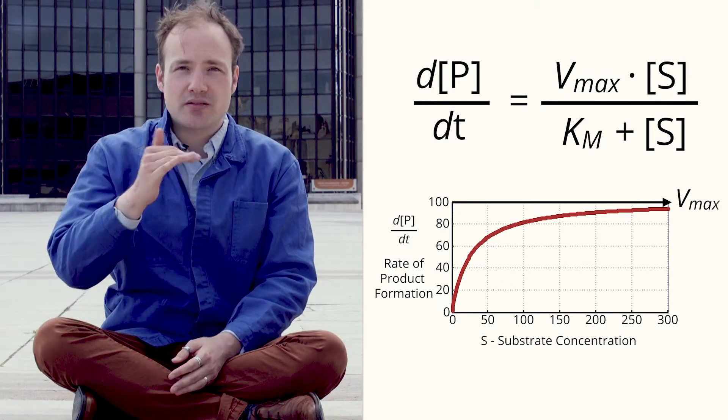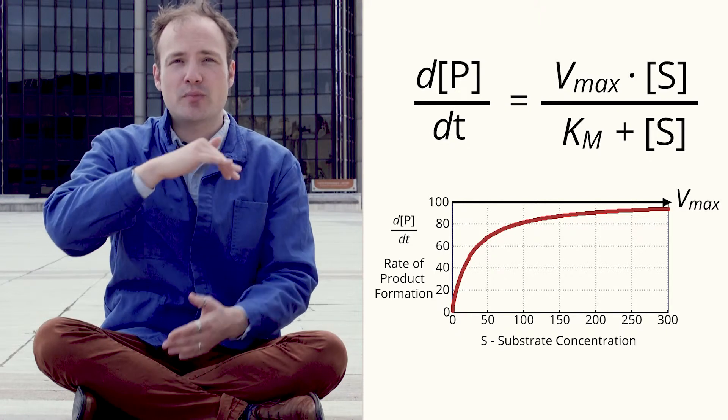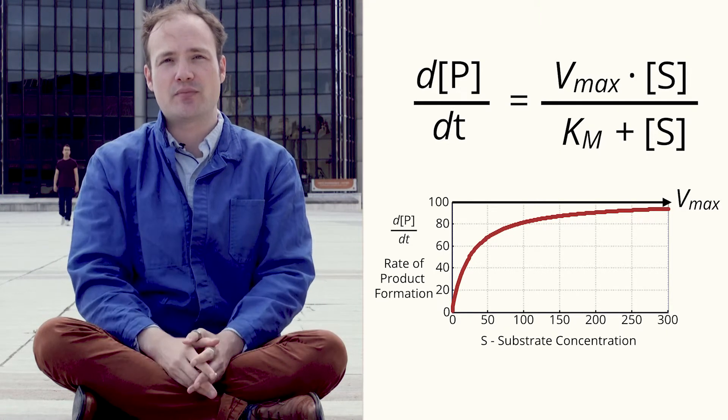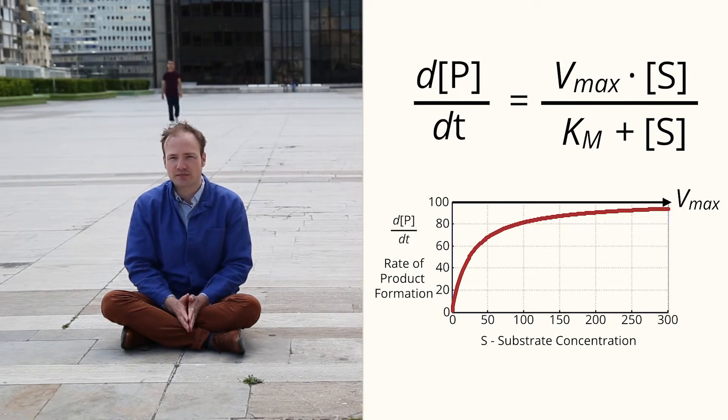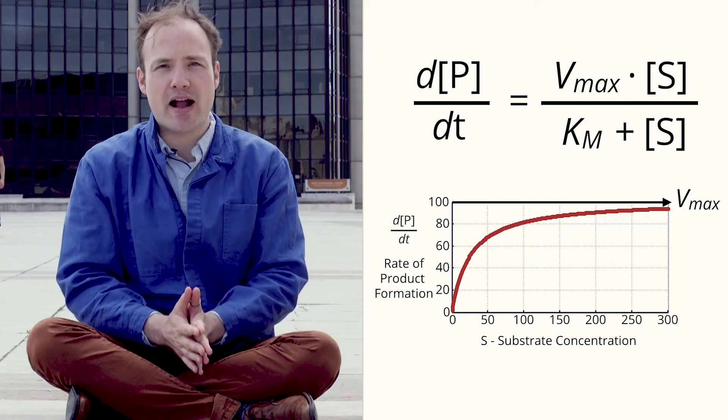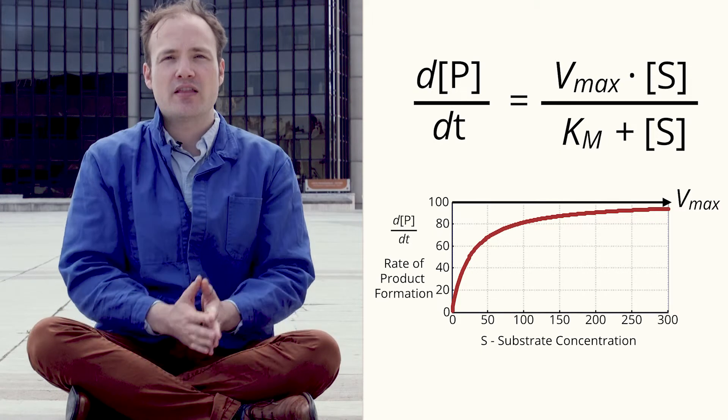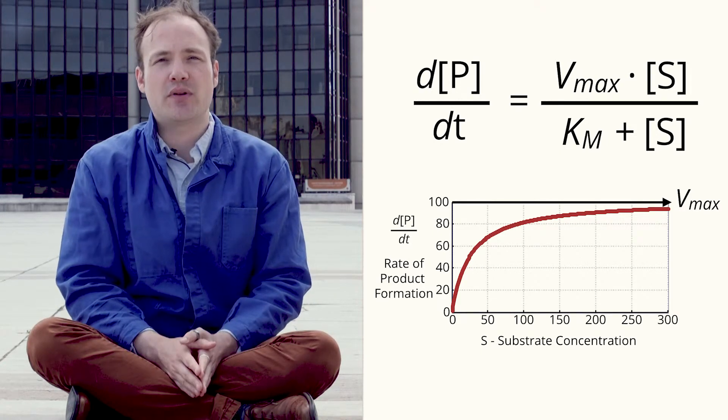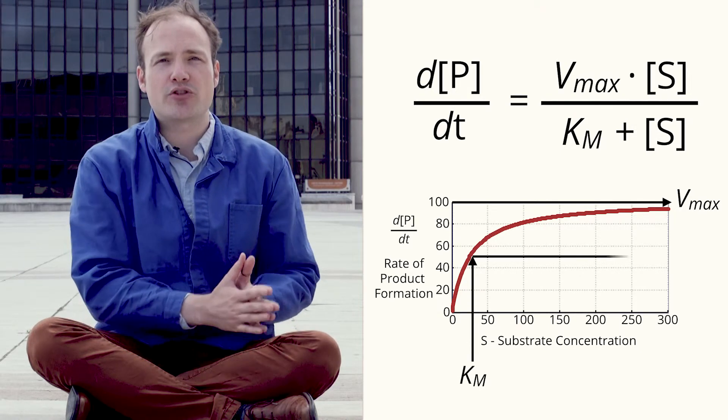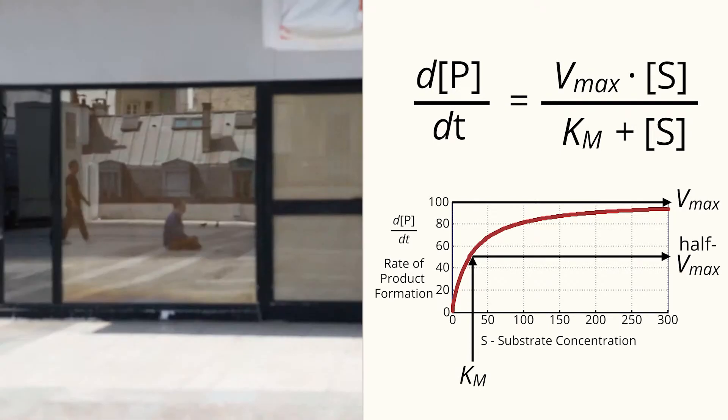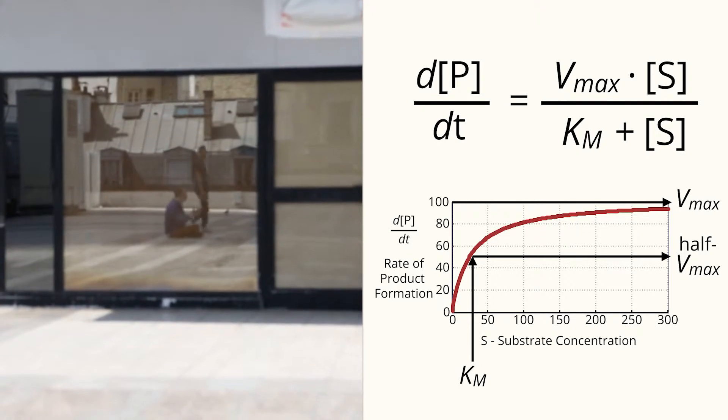This limit on the curve is reflected in the term Vmax, the maximum rate of the enzymes. Besides the maximum rate, the curve has one more key feature, how quickly or slowly the maximum is approached. This is where the Michaelis constant comes into play. Km represents the substrate concentration at which the reaction rate is one-half maximum. We can see this in the curve.